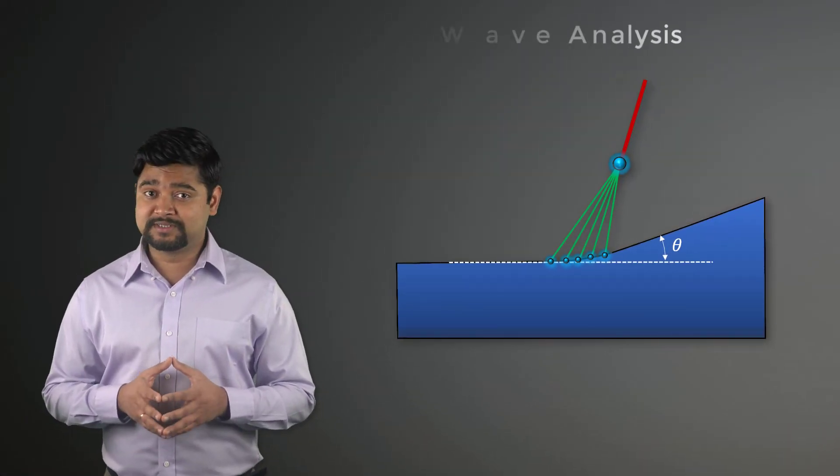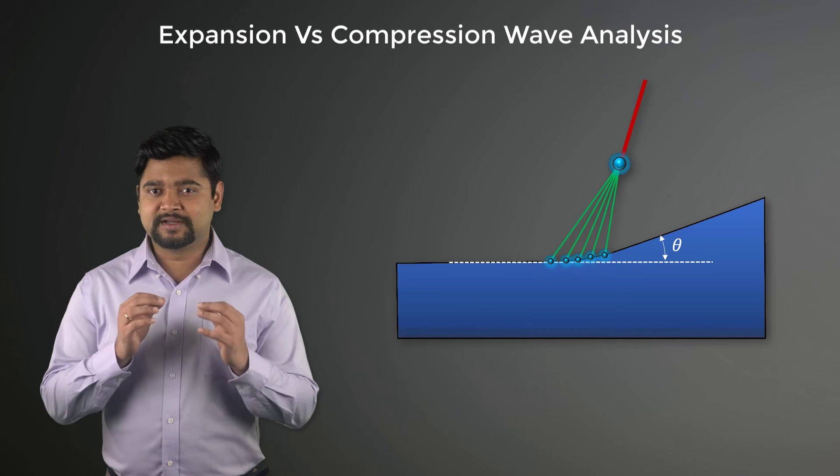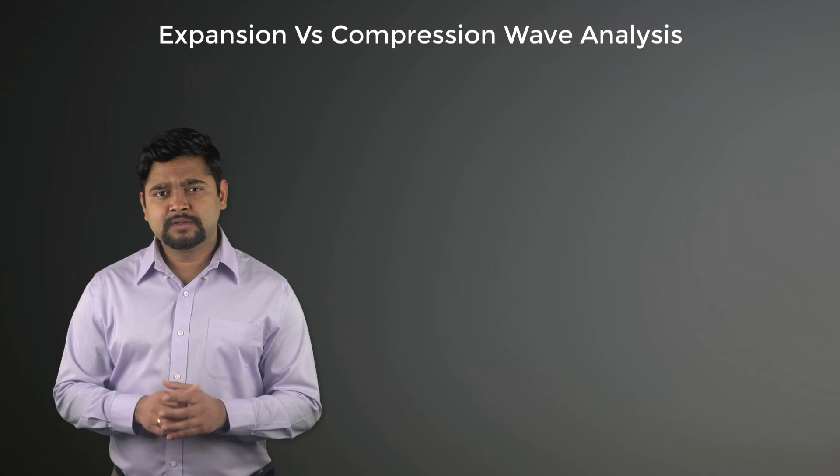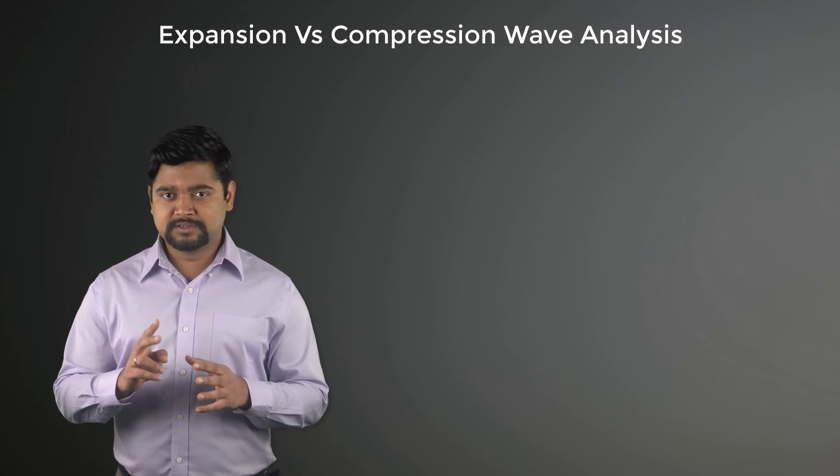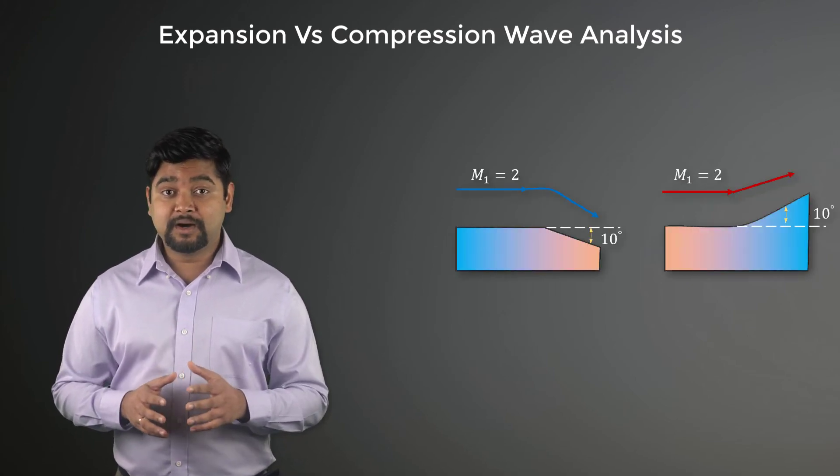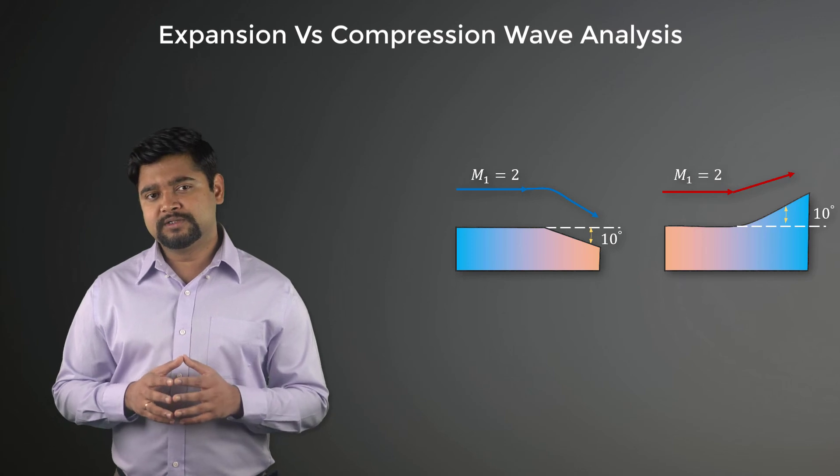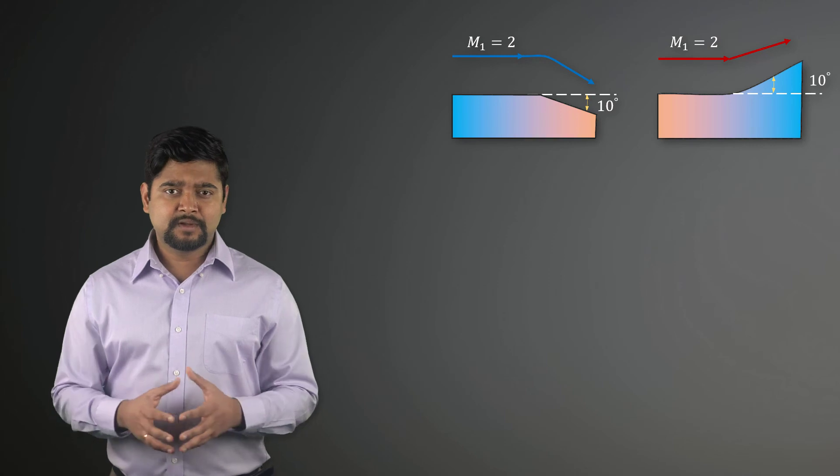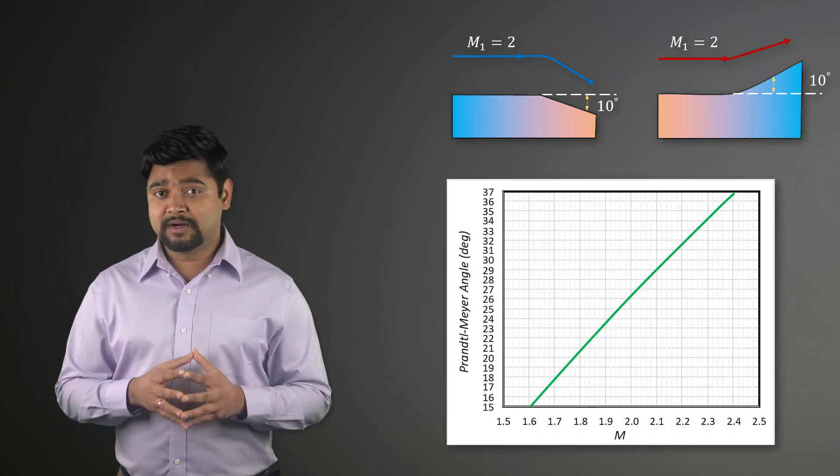Before we wrap up this lesson, let us look at a comparison of expansion and compression wave analysis. Let us consider two cases where supersonic flow at Mach equals 2 encounters a 10-degree expansion and a 10-degree compression respectively. Now, based on the incoming Mach number, we get a nu M1 of 26.38 for both the cases.